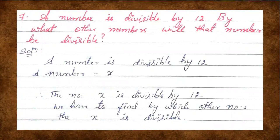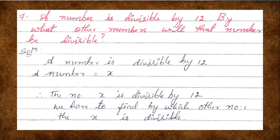The next one, the seventh question. The given question is: a number is divisible by 12. By which other number will that number be divisible? A number is not given here; it is told that a number is divisible by 12, and we have to find by which other numbers that number is divisible.